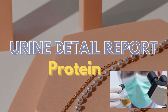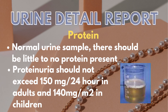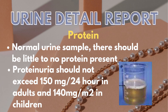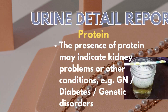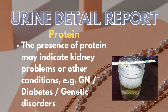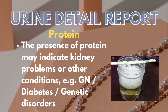Another significant component is protein in urine. Normally, urine may contain little to no protein, but proteinuria should not exceed 150 mg in 24 hours in adults and 140 mg per m² in children. The presence of protein greater than this may indicate kidney problems or other conditions, for example glomerulonephritis, diabetes, or genetic disorders.